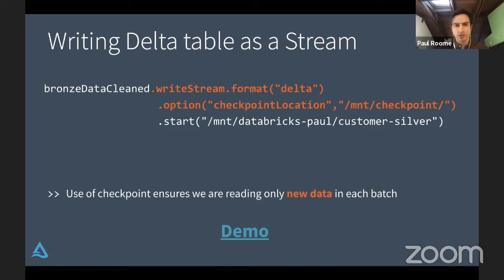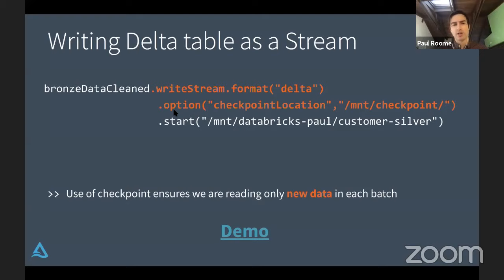We've read our bronze table as a stream, we can perform cleaning using all our structured streaming APIs, and then write that stream as format Delta into our customer silver Delta table — propagating from bronze to silver. The missing piece is ensuring that when those thousand records are inserted into bronze, we only read those thousand records versus the full petabyte of data. Here we borrow a concept from structured streaming called checkpointing. You'll notice the checkpoint location option pointing to a location on S3, which takes care of all the semantics around managing offsets and reading data exactly once. This guarantees exactly-once processing.